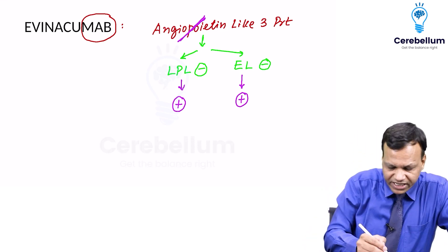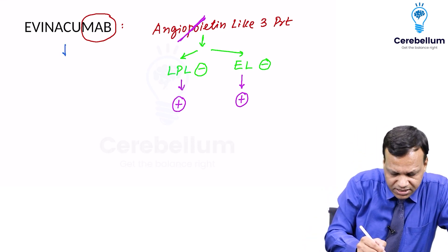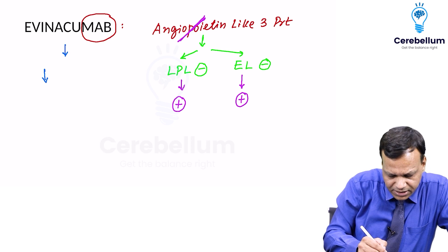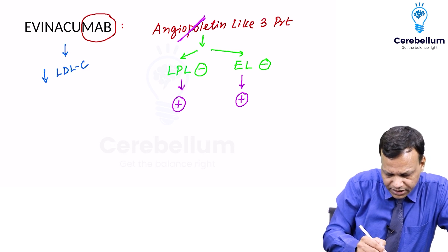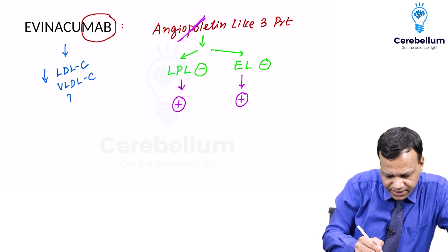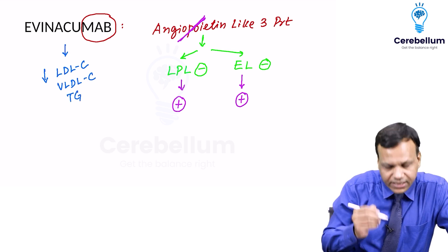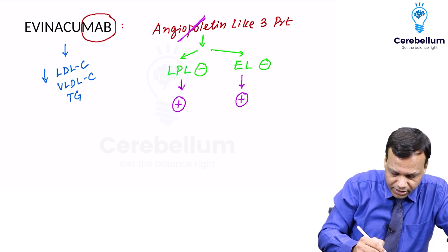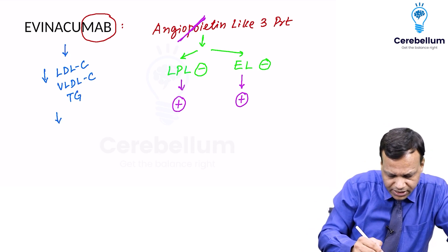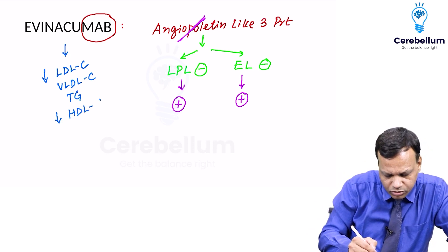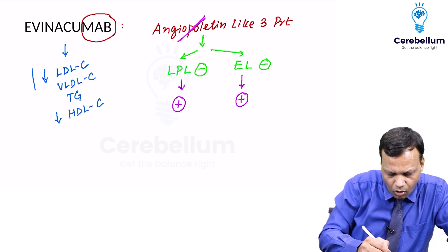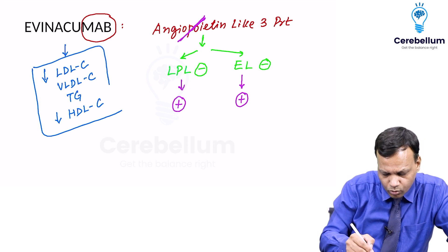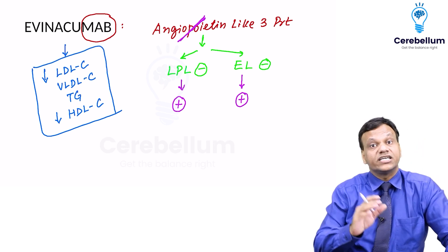So Avenacumab decreases serum lipids. It decreases LDL cholesterol, VLDL cholesterol, as well as triglycerides. These are good actions, but it also decreases HDL cholesterol. So it decreases all the cholesterols, including HDL cholesterol.